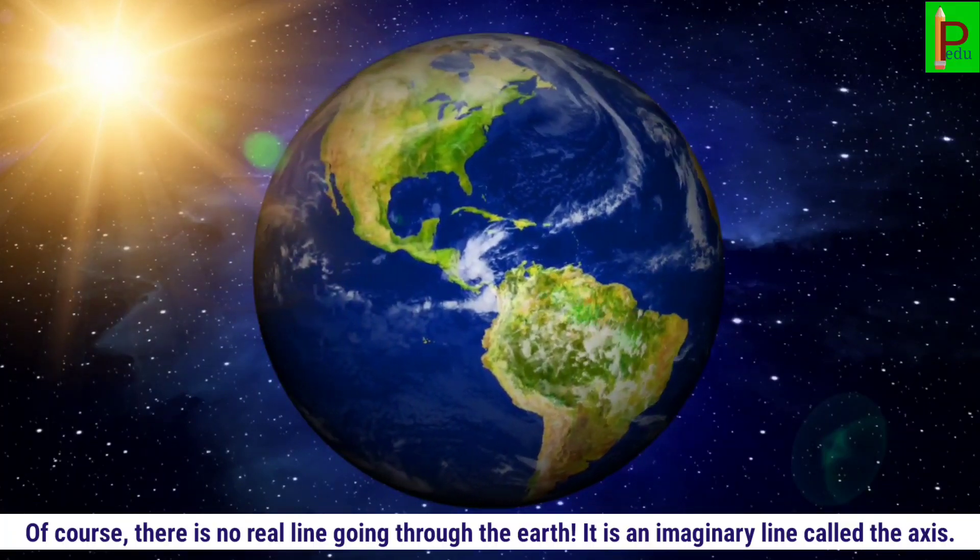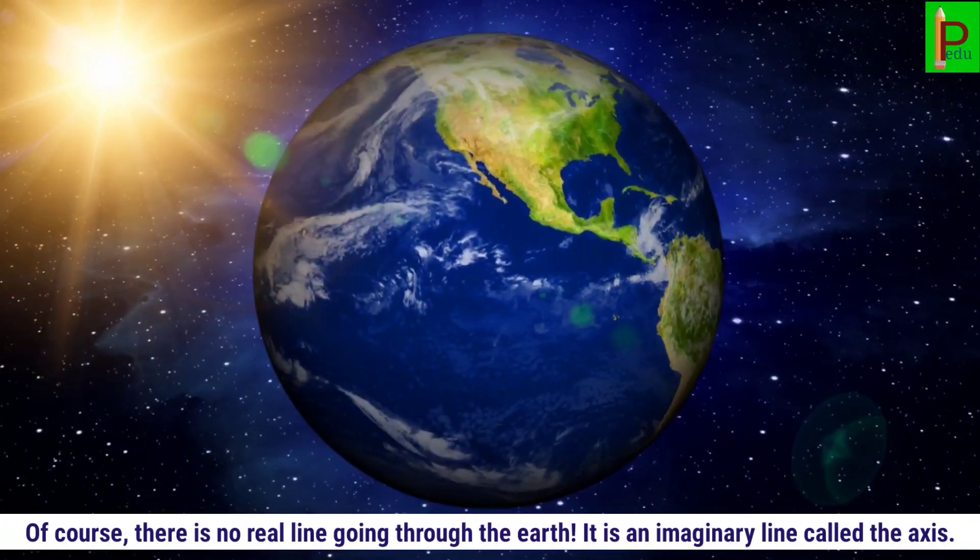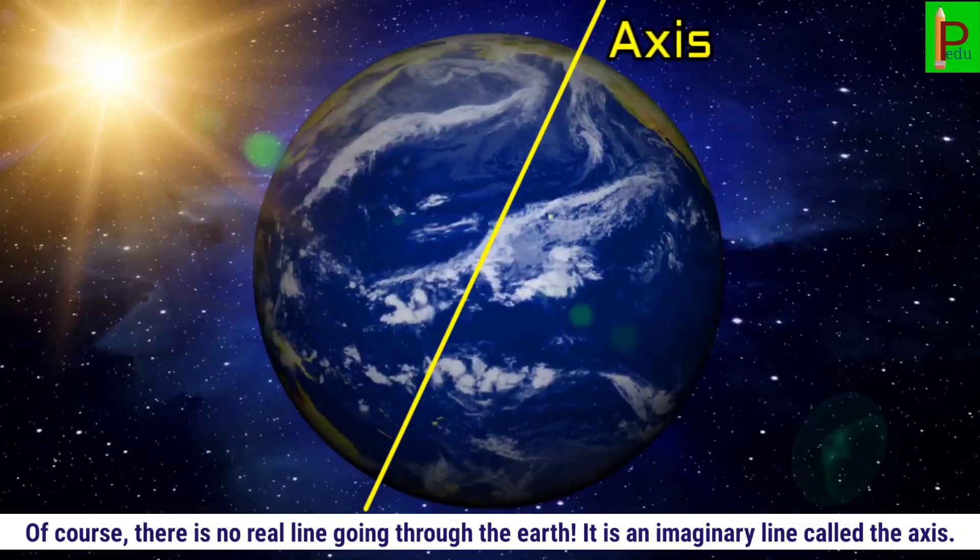Of course, there is no real line going through the earth. It is an imaginary line called the axis.